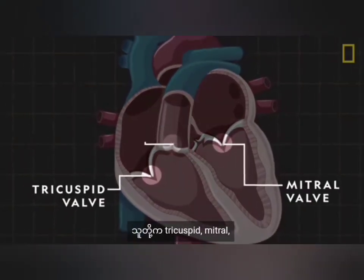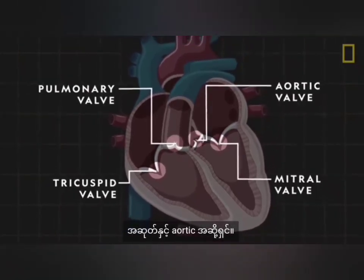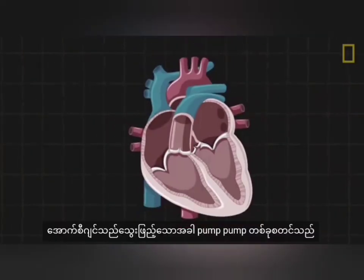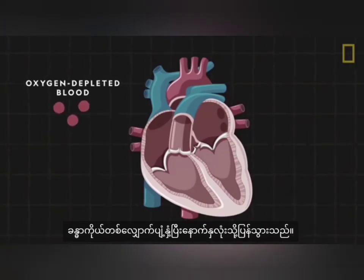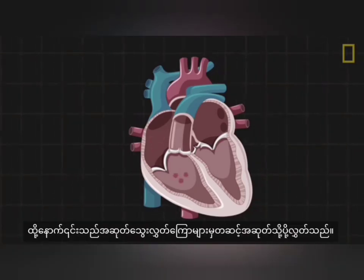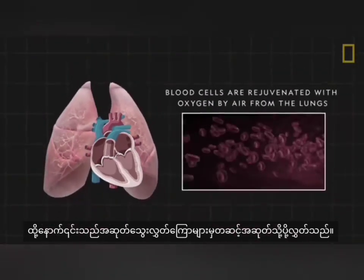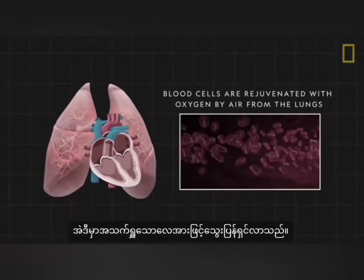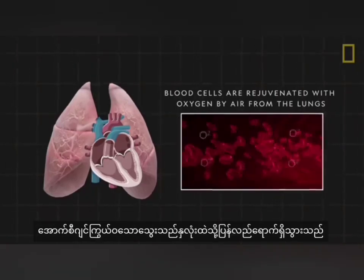The valves are the tricuspid, mitral, pulmonary, and aortic valves. A pumping cycle starts when oxygen-depleted blood returns to the heart after circulating throughout the body. The blood enters through the right atrium before flowing to the right ventricle, and is then pumped to the lungs via the pulmonary arteries, where blood is rejuvenated by air that's breathed in.